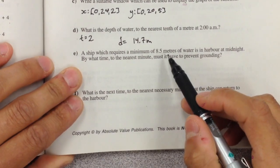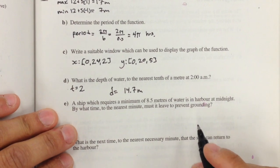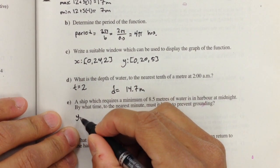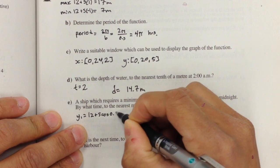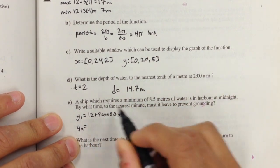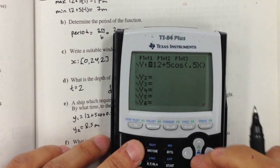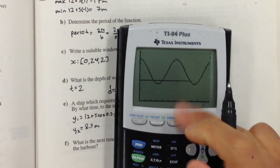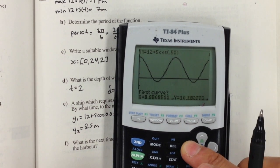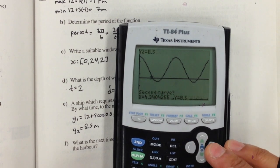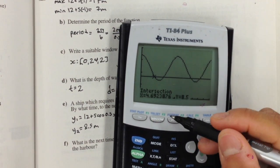A ship which requires a minimum of 8.5 meters of water is in harbor at midnight. By what time to the nearest minute must it leave to prevent grounding? This is one of those situations where we'll have to graph both equations. Graph in y1: 12 + 5cos(0.5x), and in y2, we're going to find where it intersects for the first time at 8.5 meters. Here's the graph. We want to find the intersection point, this first intersection point here. So we're looking for where my sinusoidal curve intersects at 8.5. I choose the point in between, and I get 4.69.